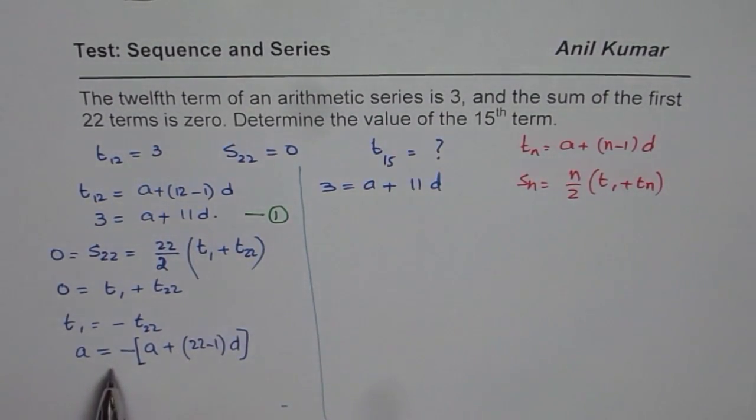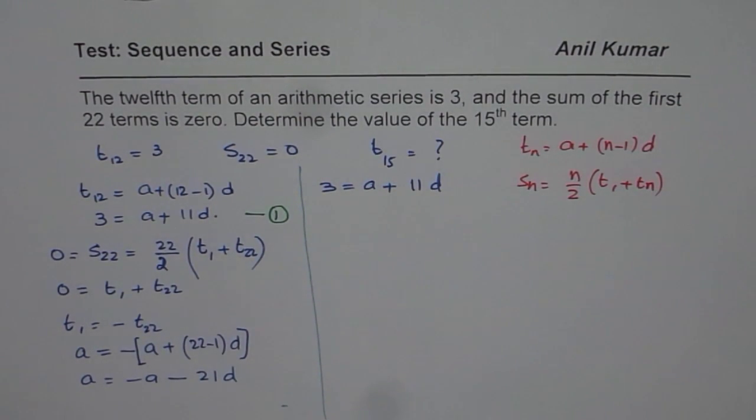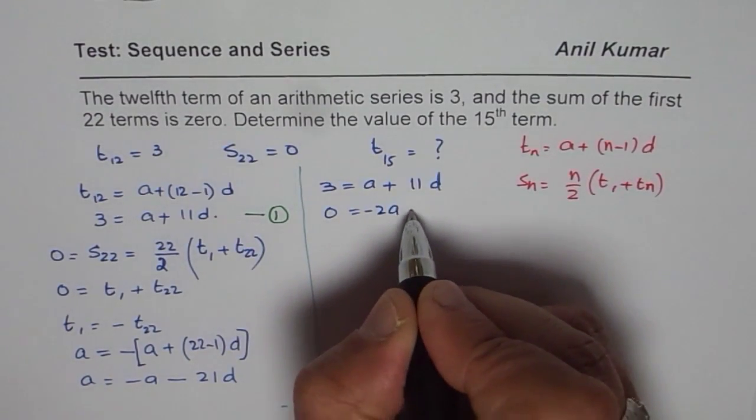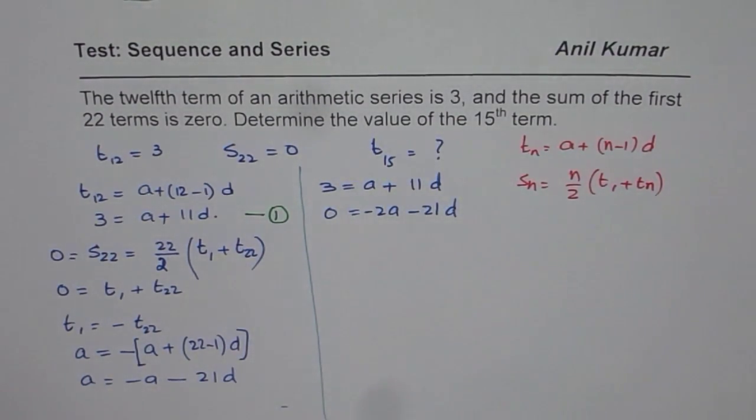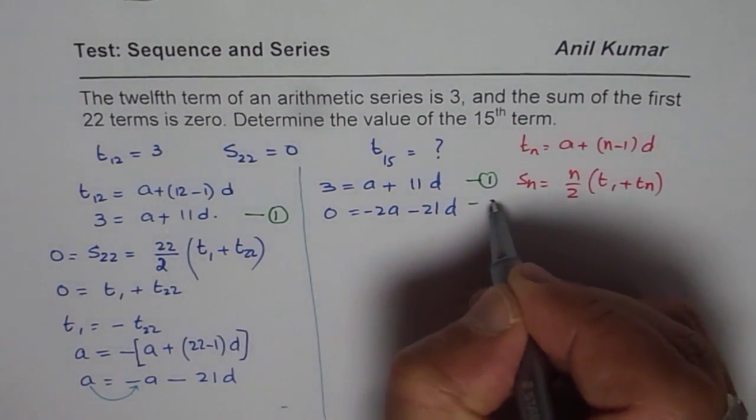So the first equation we got is 3 equals A plus 11D. And here we are seeing that A equals minus A minus 21D. So that is what we get. So we will rearrange. Let me take A to this side, so I get 0 equals minus 2A minus 21D. So what I did was I brought this A to the right side. So we get 0 equals minus 2A minus 21D. These are the two equations which we are talking about. This is our equation 1, this is 2.